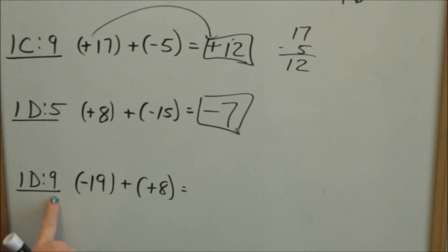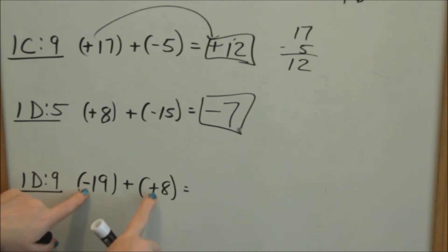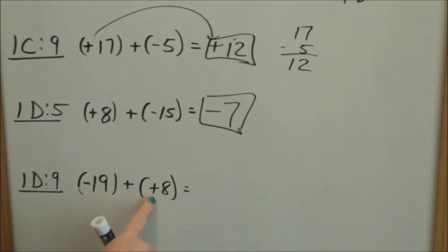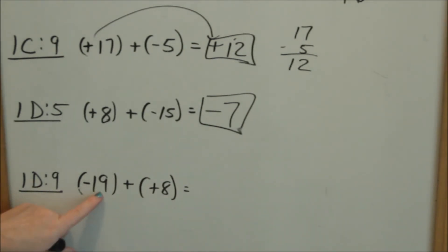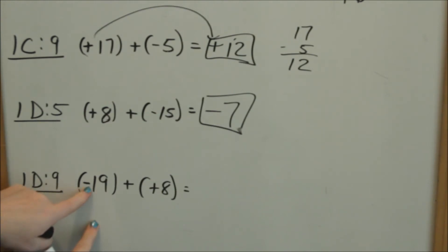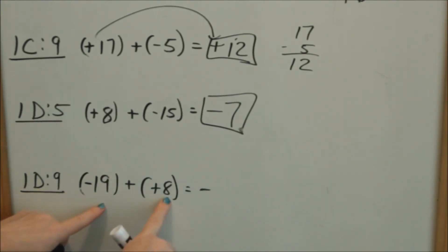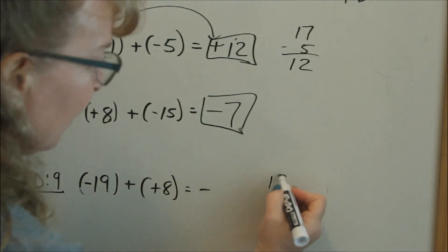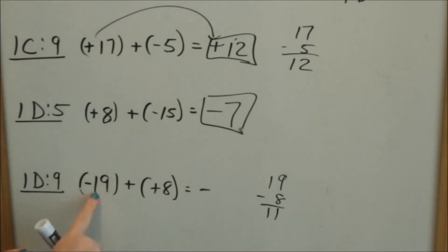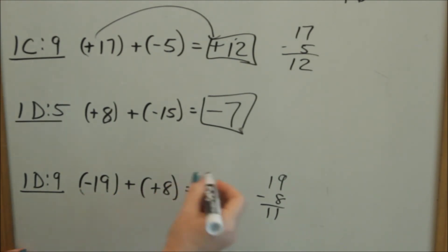Look at number 9 on D. My signs are different — one is negative, one is positive. I owe 19 and then someone is adding giving me 8. If I owe $19 and someone gives me 8, I'm still going to owe because I haven't covered all that debt yet. The sign of the larger number is your answer sign, so I'll still owe — negative. When signs are different, subtract the two numbers: 19 minus 8 is 11, so I still owe $11.